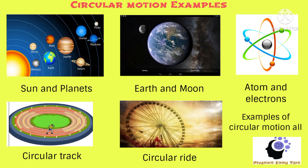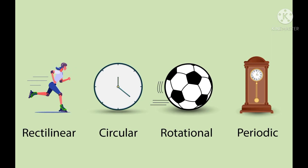Next, coming to periodic motion or oscillatory motion. Here you can see a simple pendulum, which is the best example of periodic motion because it is moving in a to and fro path, and so it is said to be in periodic motion.